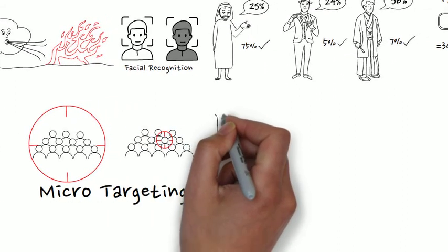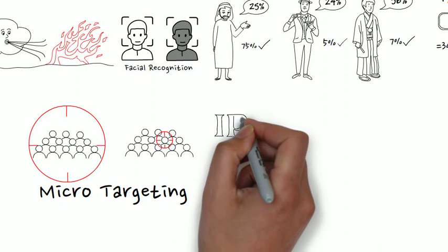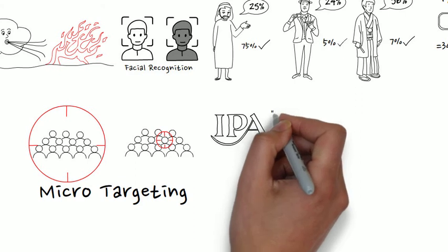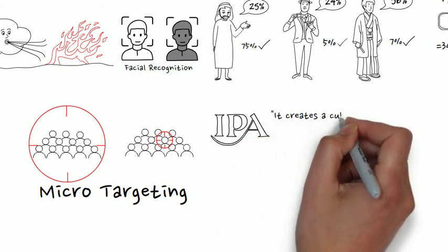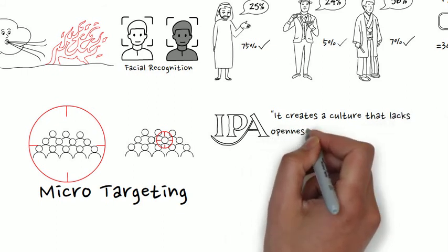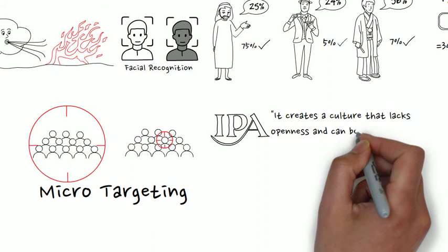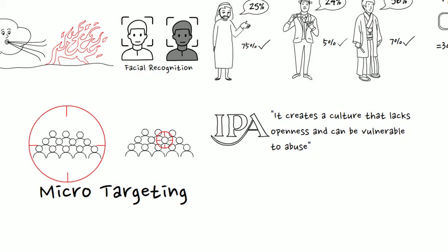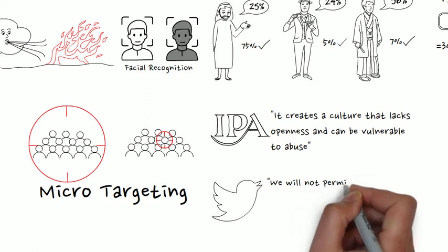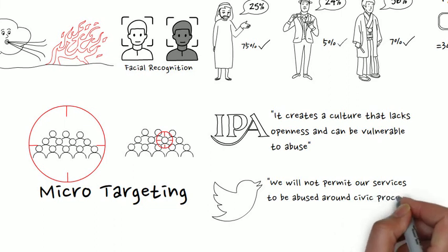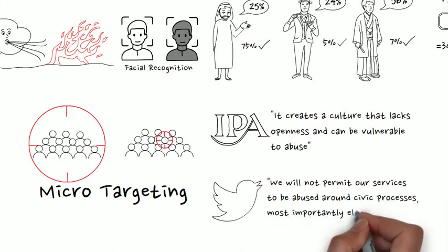The Institute of Practitioners in Advertising (IPA) has called for a suspension of micro-targeting ads in political campaigns due to the covert, secret nature of these ads that do not have to be listed for public display like other political advertising. It creates a culture that lacks openness and can be vulnerable to abuse. With the U.S. 2020 election looming, Twitter announced: 'We will not permit our service to be abused around civic processes, most importantly elections. Any attempt to do so, both foreign and domestic, will be met with strict enforcement of our rules.'